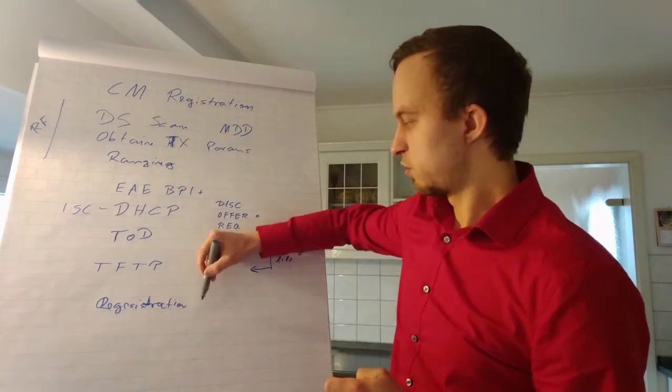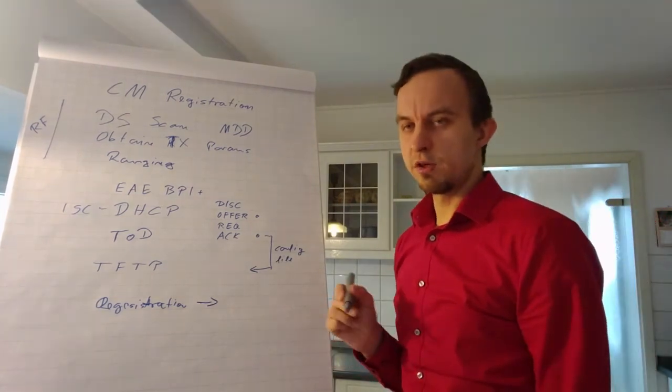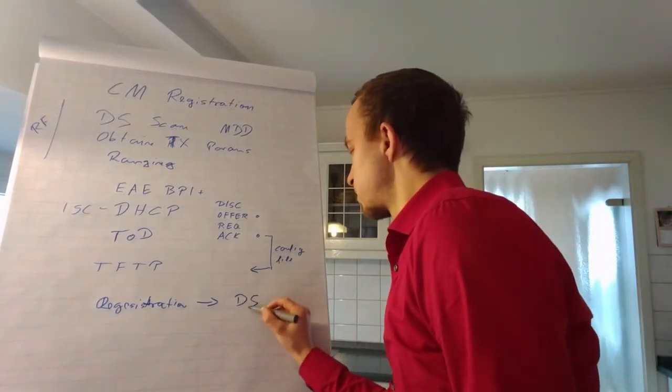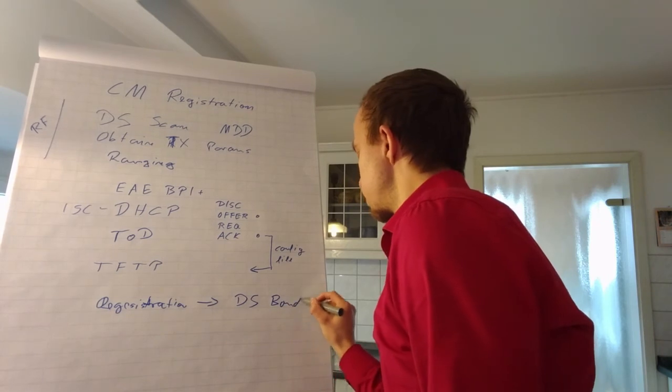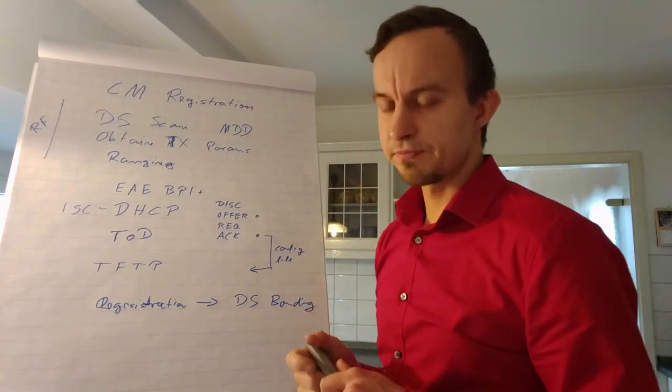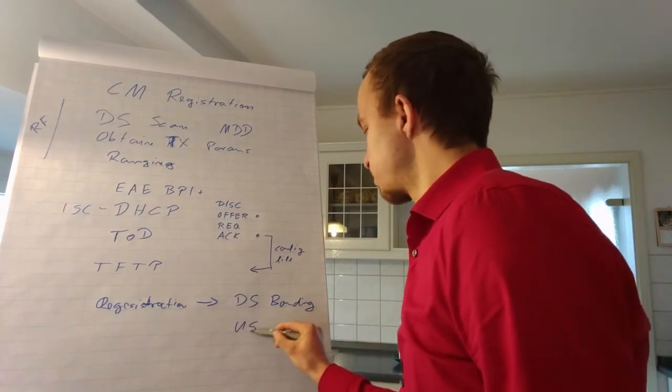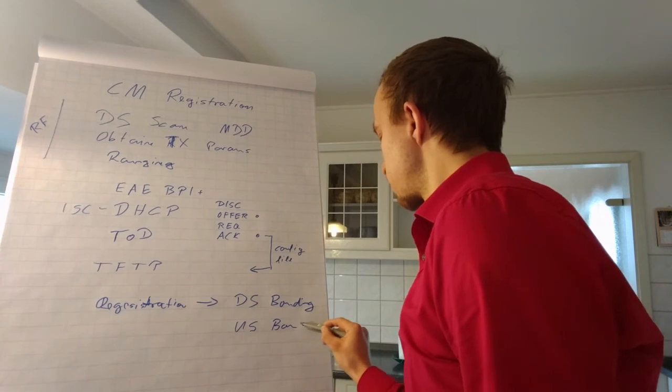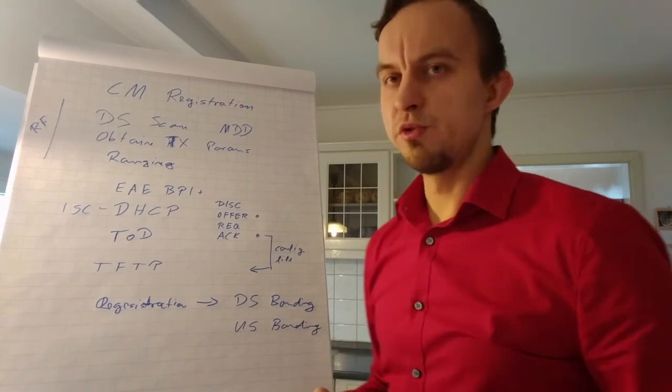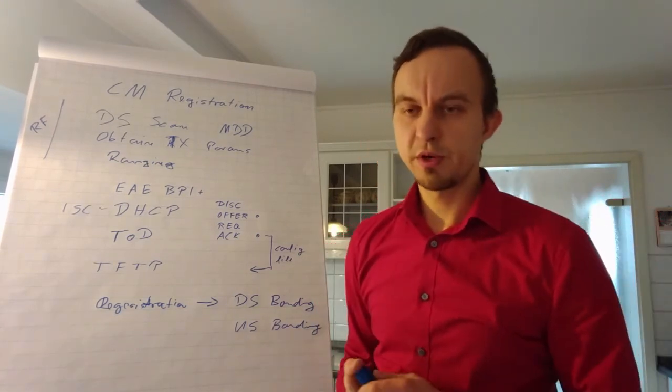After the cable modem interprets the config file, what happens next is that it could be, if we have DOCSIS 3.0, that we have the downstream channel bonding, which means using more than one access channel. Afterwards, the upstream channel bonding will be performed, which means using more than one channel in the reverse direction.